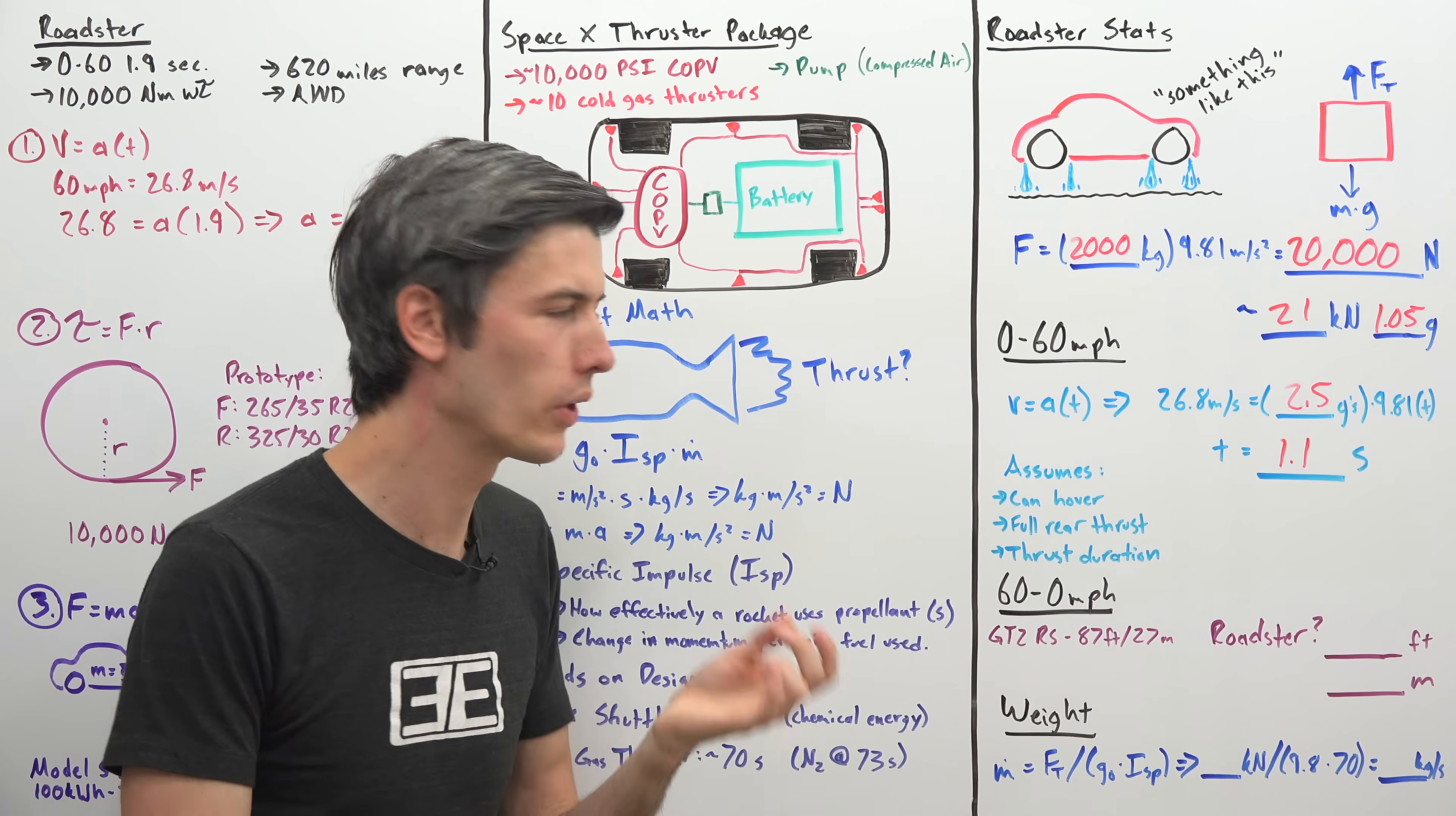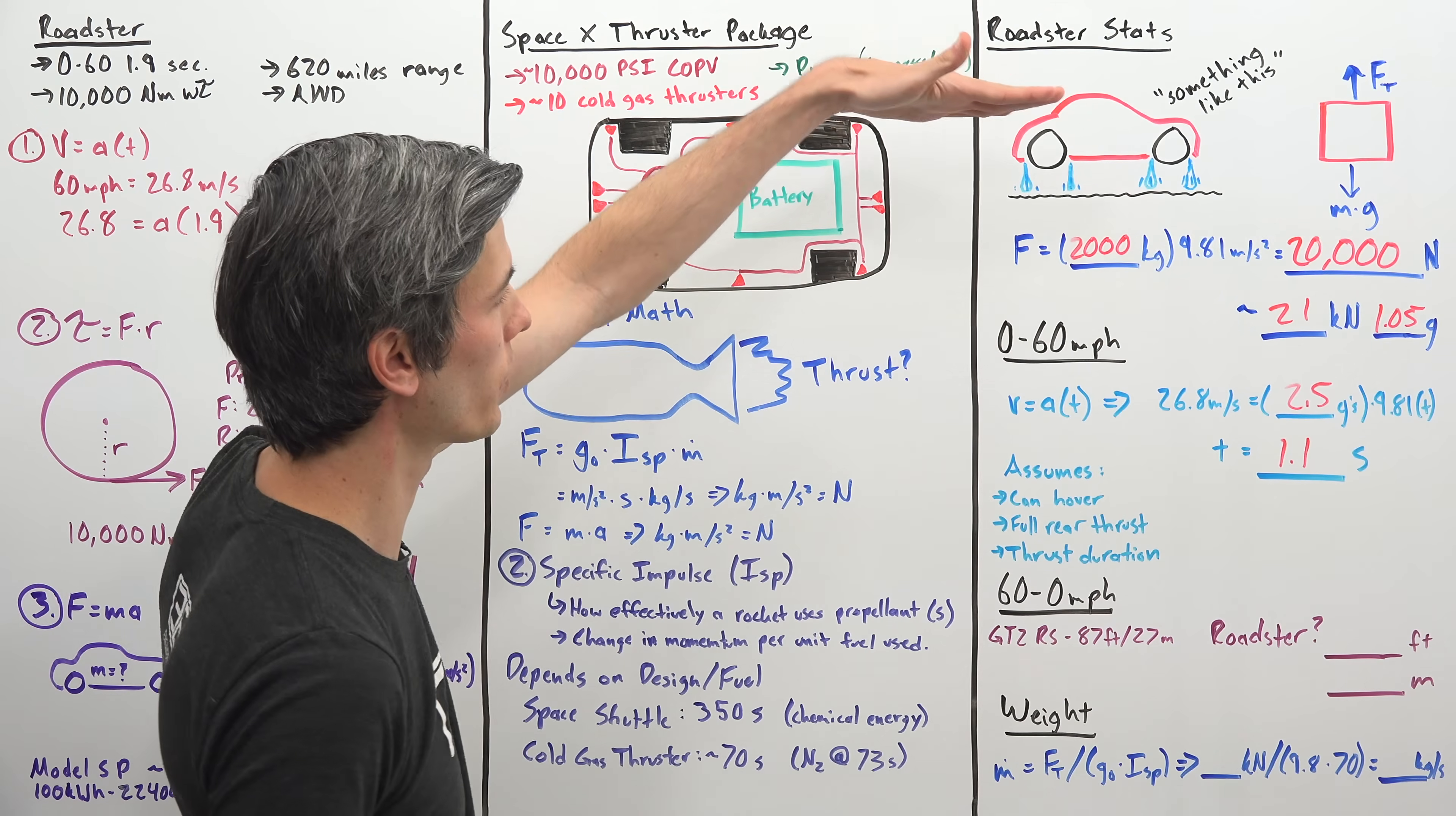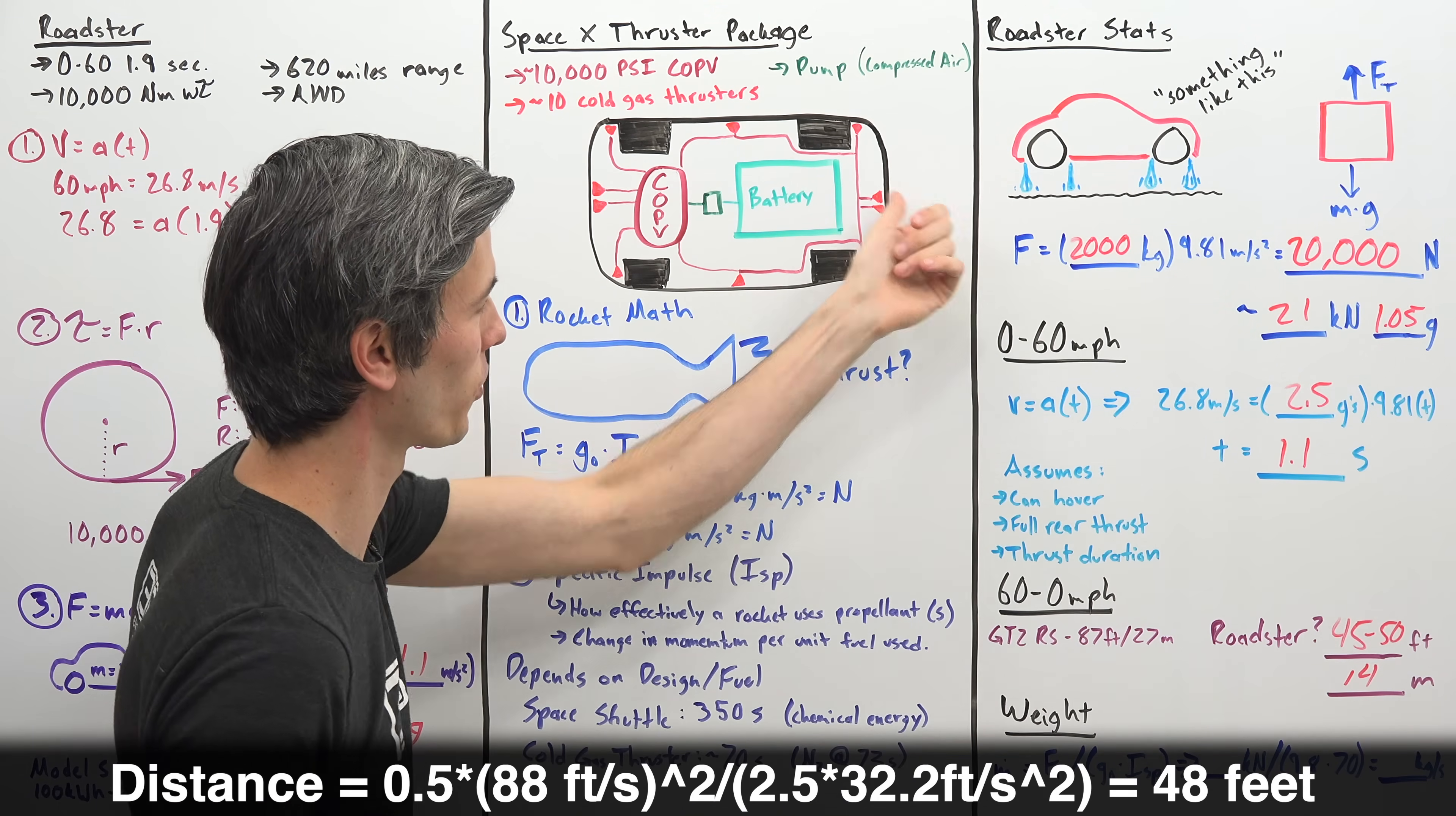Now there are other cool things you can calculate. So how about braking from 60 miles per hour down to zero, and what distance can it accomplish this? Now the best I found out there was the Porsche GT2 RS, which Motor Trend tested of having a 60 mile per hour down to zero stopping distance of just 87 feet, or about 27 meters. This Roadster, if it was able to apply that full thrust in the forward direction while slamming on the brakes, would be capable of stopping from 60 miles per hour down to zero in about half of that, 45 to 50-ish feet, or about 14 meters. Absolutely insane, the kind of stopping power that this might have, assuming it has those thrusters up front.